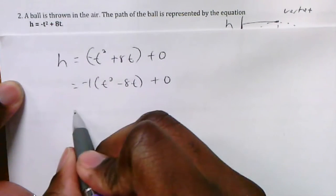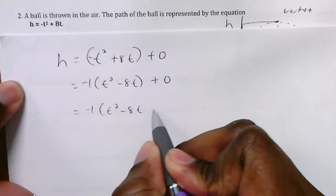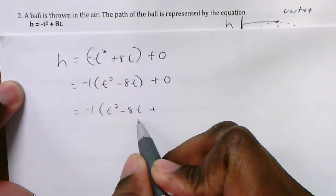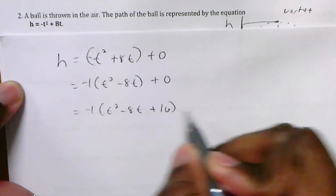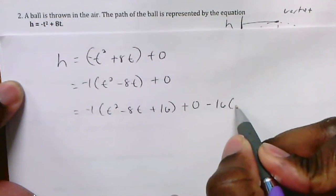If you begin finding the vertex, I have to find the c value. So it's going to be t squared take away 8t plus half of negative 8 is negative 4. So you square that and it's 16 plus 0 take away 16 times negative 1.